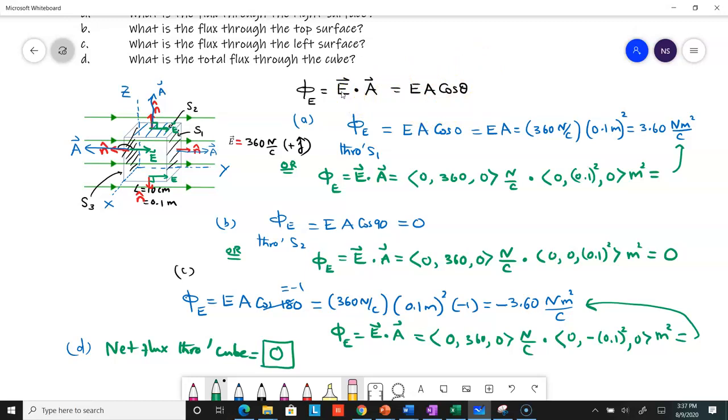But in some cases, if E is given in the IJ notation, perhaps it's easier to do the dot product instead of trying to figure out the angles between the area vector and the electric field vector.